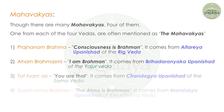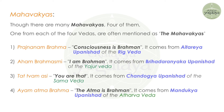Then come the Mahavakyas. Mahavakyas are the equation between the Jeeva and the Brahman — four of them, one from each of the four Vedas, are often mentioned as the Mahavakyas. They speak about the relation between Jeeva and Atma. First comes 'Prajnanam Brahma' — Consciousness is Brahman — from the Aitreya Upanishad of the Rigveda.